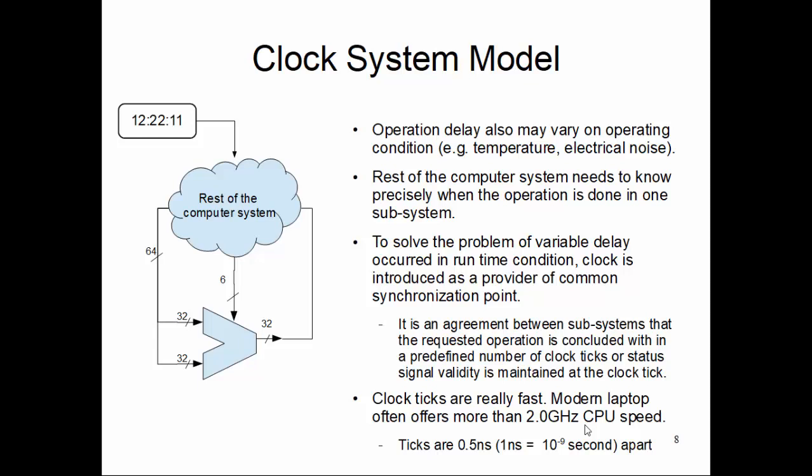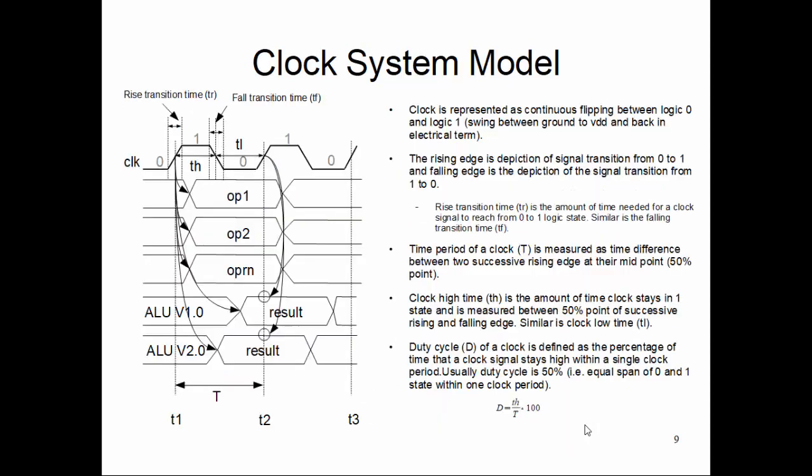From one logic low to high transition to the next logic low to high transition, that time gap is 0.5 nanoseconds. You can imagine this is really fast. Let's say I have a logic transition starting at this point, then it goes down and then goes up. This whole distance is 0.5 nanoseconds.